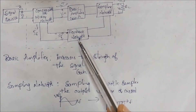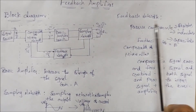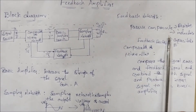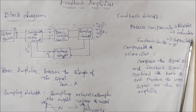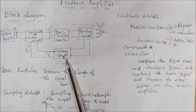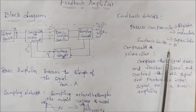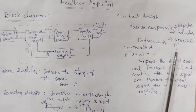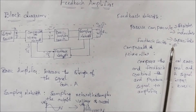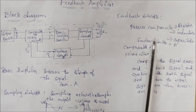The next block is the feedback network. This is a resistive configuration using passive components — resistors, inductors, and capacitors. In the block diagram, we denote it as beta. Beta is nothing but the feedback factor, or feedback ratio, and its value is between 0 and 1.